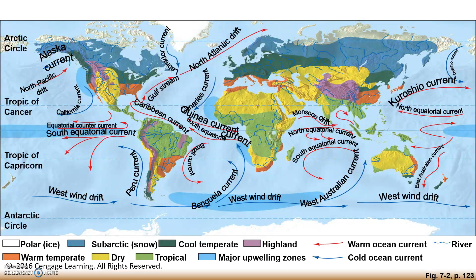Prevailing winds blowing across and over the oceans produce mass movements of surface water called ocean currents, as depicted on screen. Major ocean currents help redistribute heat from the Sun and influence the climate and resulting vegetation, especially near coastlines. This diagram also depicts cool temperate areas, dry areas, and tropical areas based on color coding.